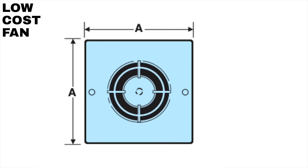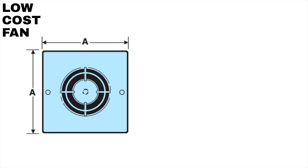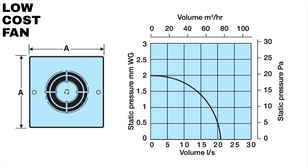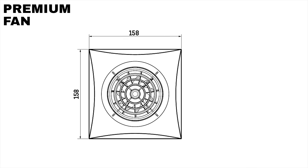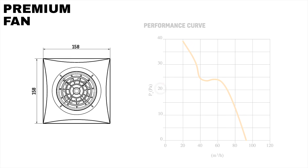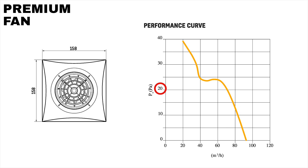We can begin to understand the performance by comparing the low cost fan and the premium one. With the low cost fan, the pressure quickly drops as resistance in the ductwork increases, reaching zero airflow at a static pressure of just 20 pascals. Compare this to the premium fan — at 20 pascals, it still achieves an airflow rate of around 70 cubic meters per hour.